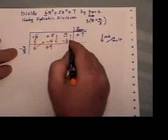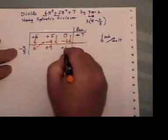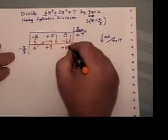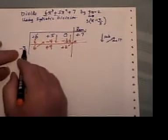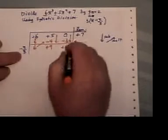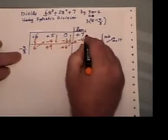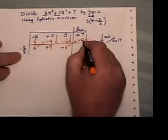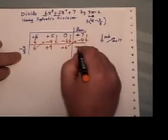And subtract. 0 subtract negative 6 is plus 6. Now I'm multiplying again. Negative 2 times 6 is negative 12. Divide by 3 is negative 4. And subtract. 7 subtract negative 4 would give you plus 11.